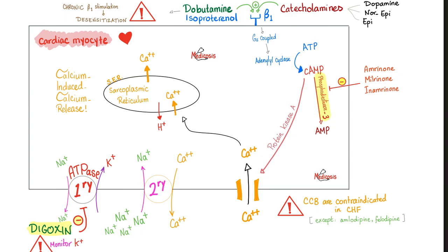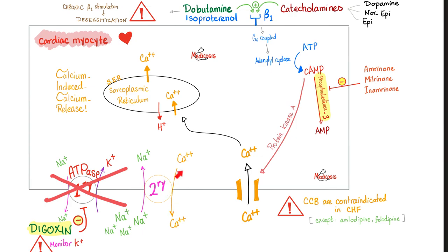Digoxin boosts cardiac contractility by inhibiting the sodium-potassium primary ATPase pump. When you block this, sodium will not leave and potassium will not enter. Sodium accumulates inside — too much positive charge inside. When there's too much sodium inside, the secondary active transporter will not work either, because it was dependent on the primary, and you already have too much sodium in. Therefore calcium cannot be pumped out, calcium stays inside the cardiac myocyte — calcium-induced calcium release from the sarcoplasmic reticulum — calcium makes actin and myosin interact, resulting in increased cardiac contractility.